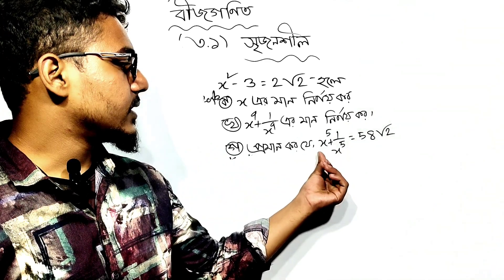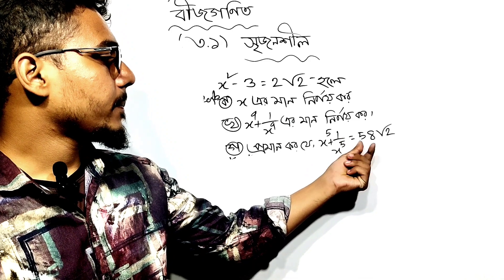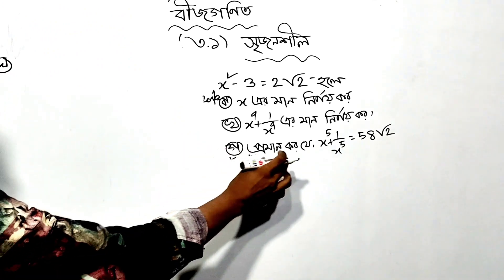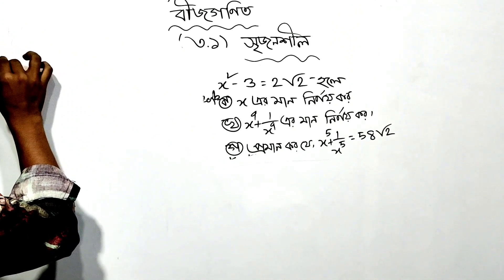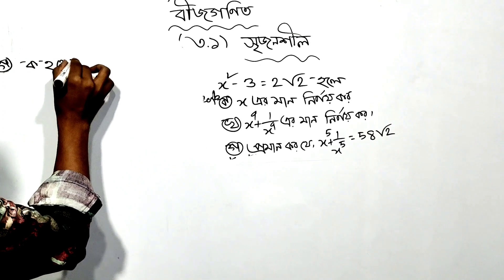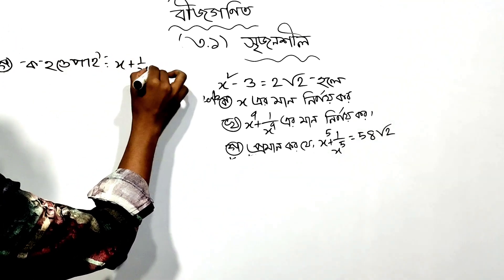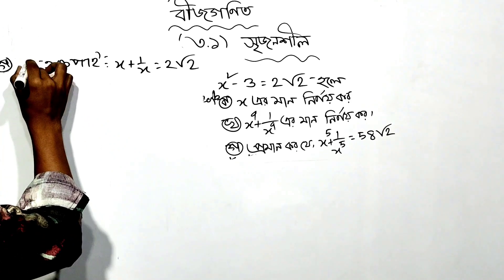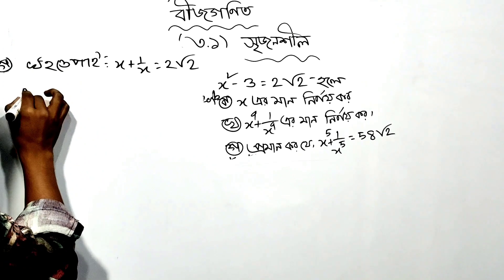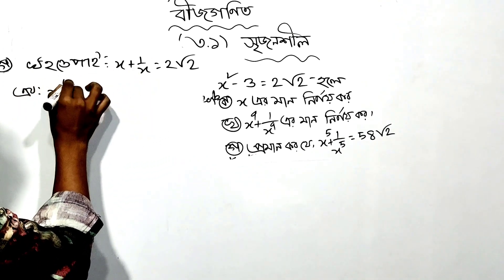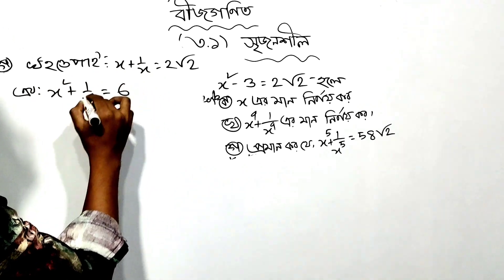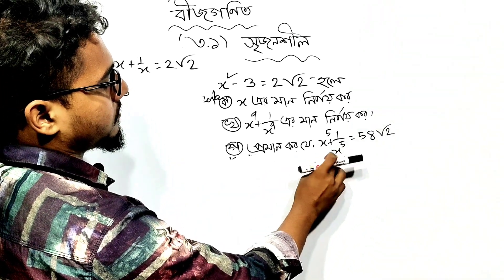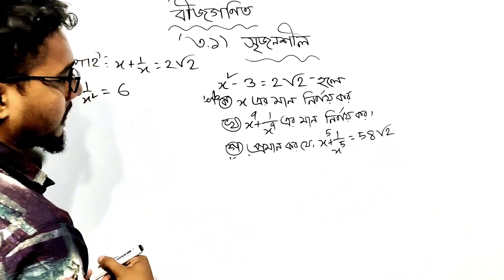Now we will find the solution for x to the power 5 plus 1 by x to the power 5. We have x to the power 5 plus 1 by x to the power 5, equal to root 2. So x to the power 5 plus 1 by x to the power 5.